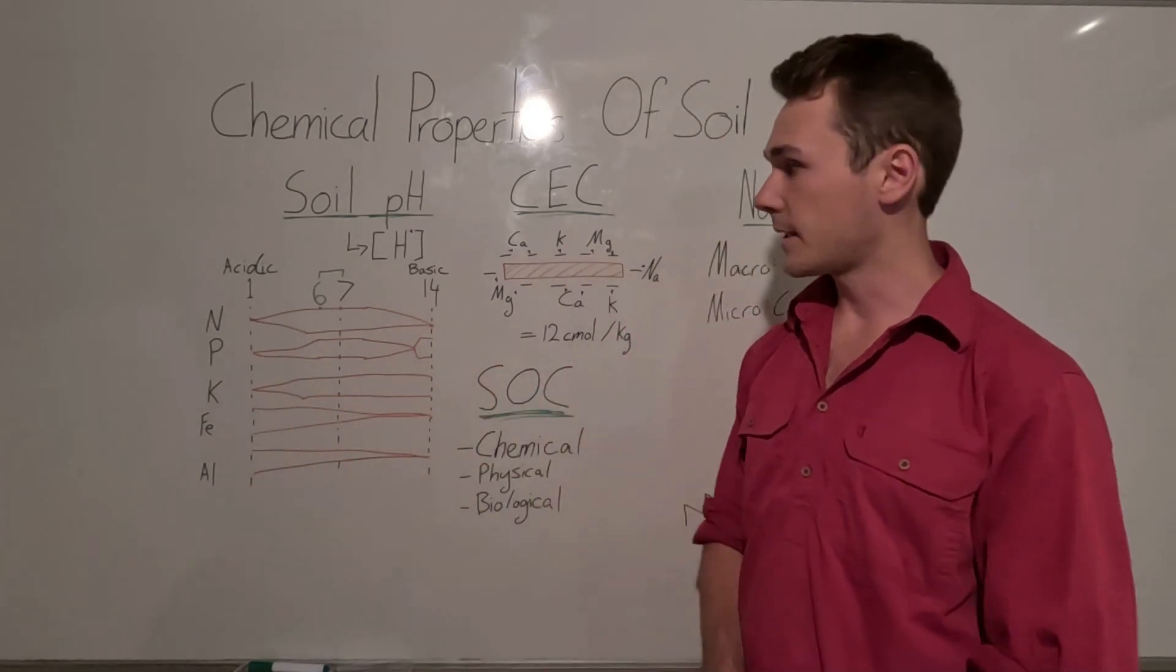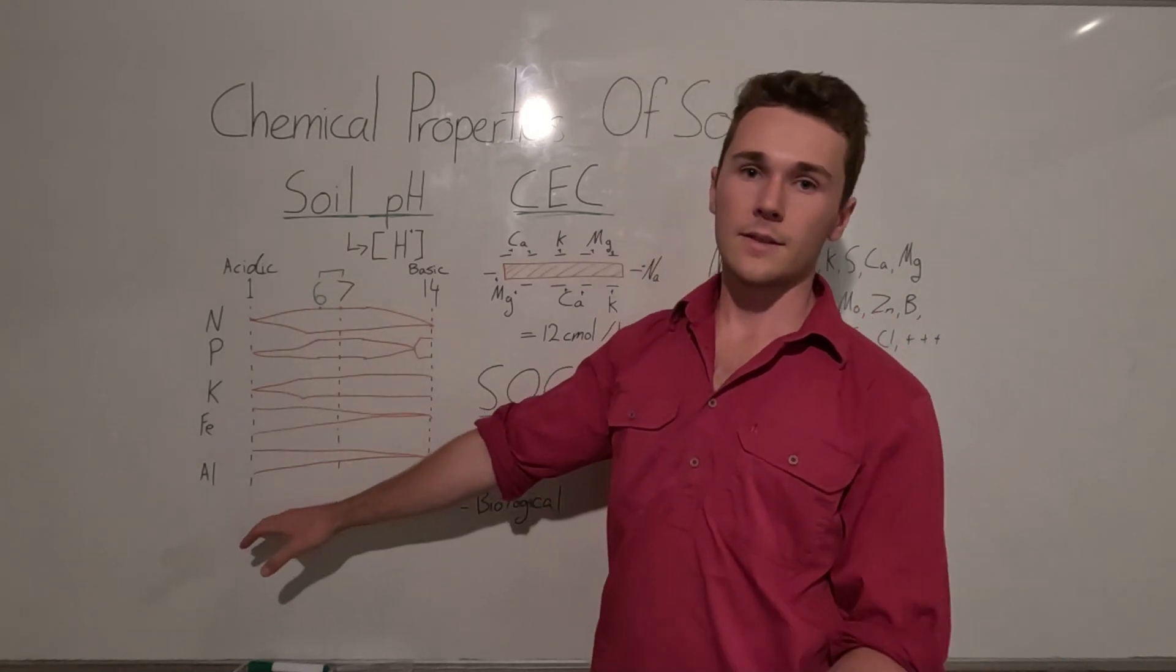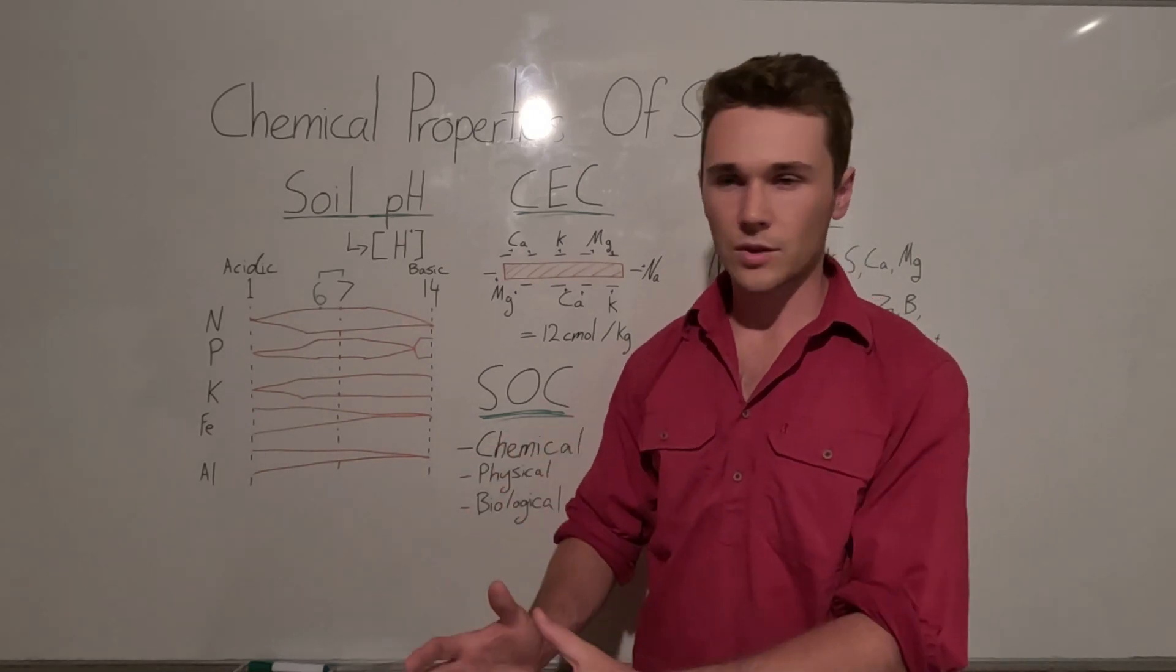Now all this works with our nutrients but it also works with anti-nutrients such as aluminum. Now aluminum can become toxic to our plants, and so when we have a really low pH, aluminum increases in its availability and can poison our plants.